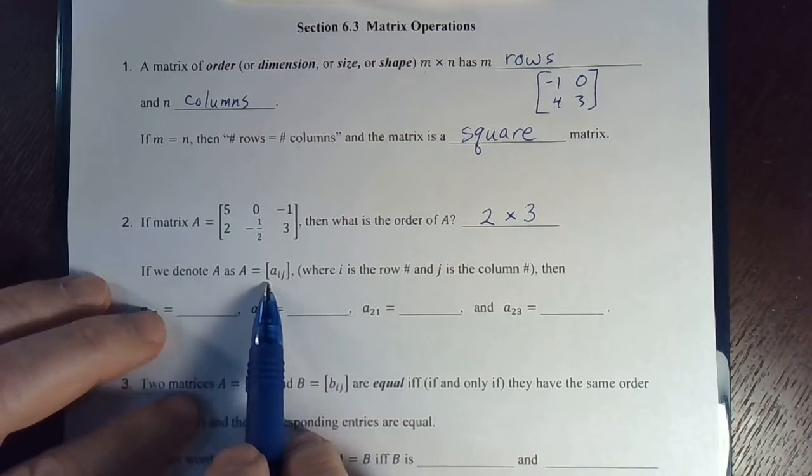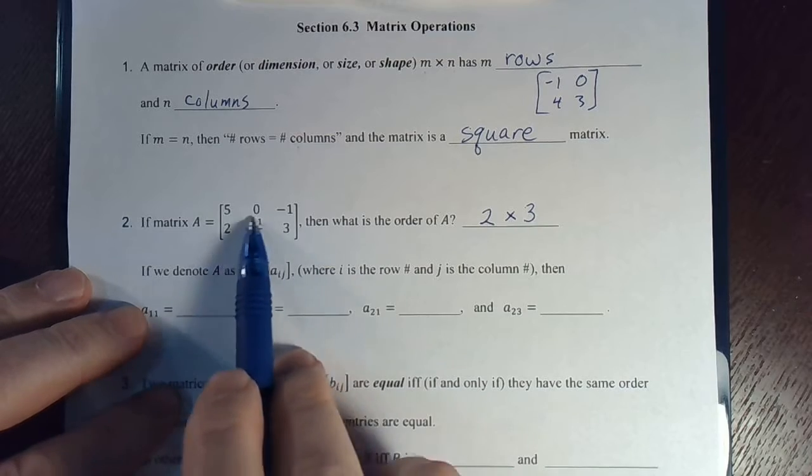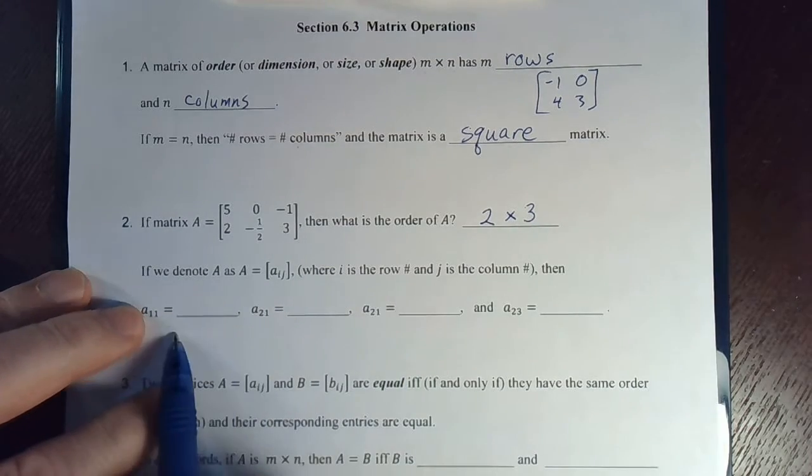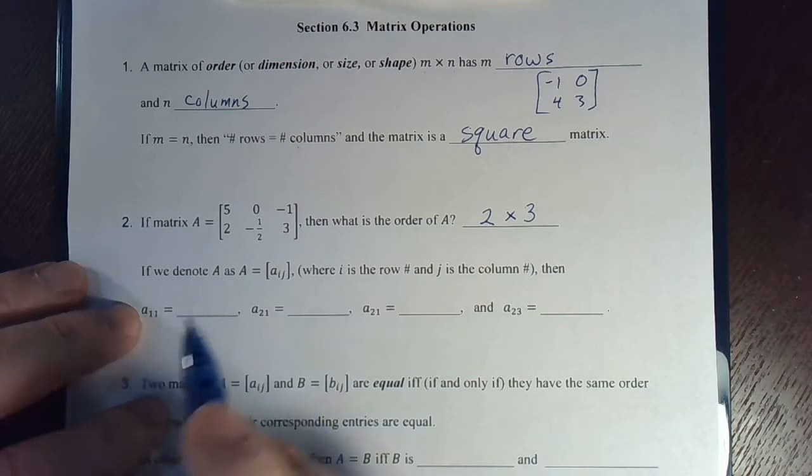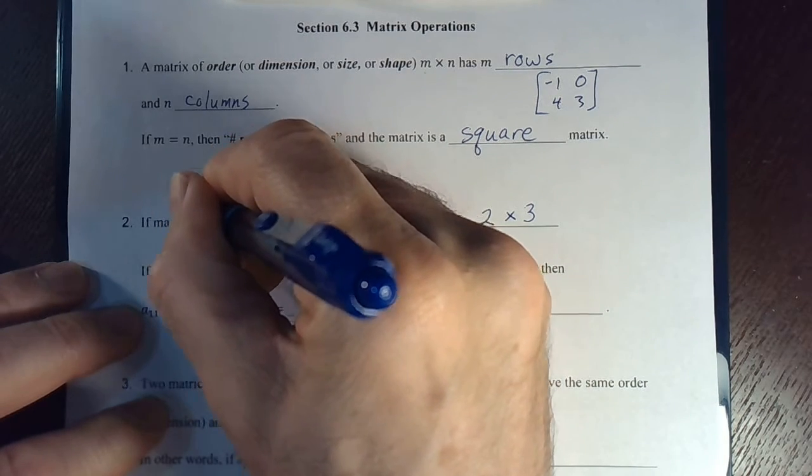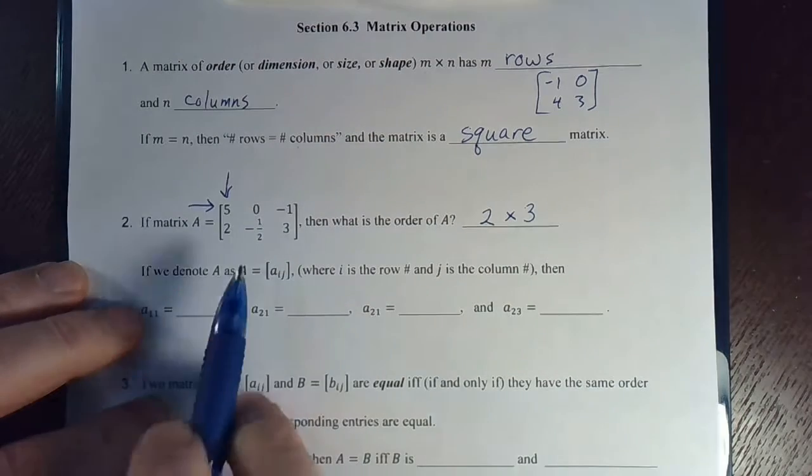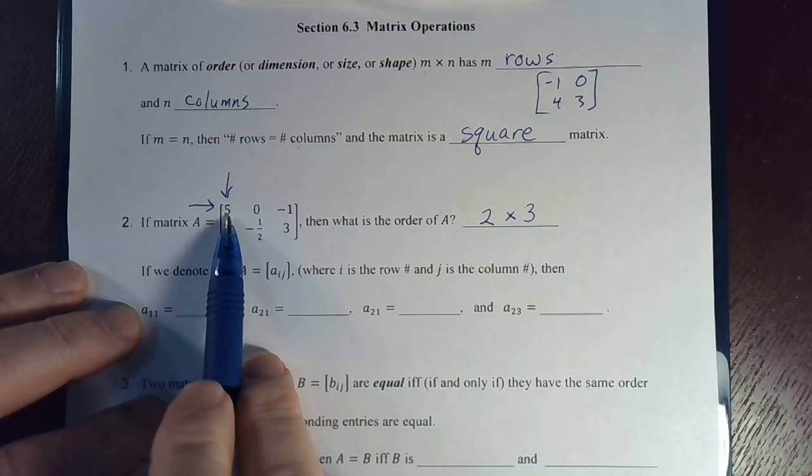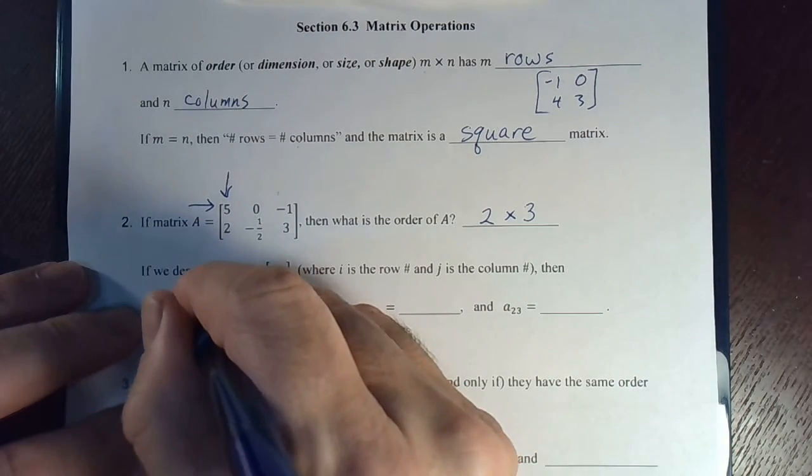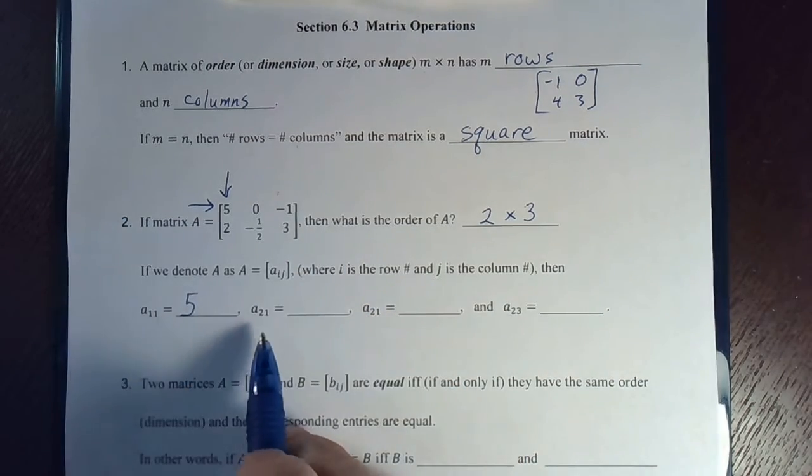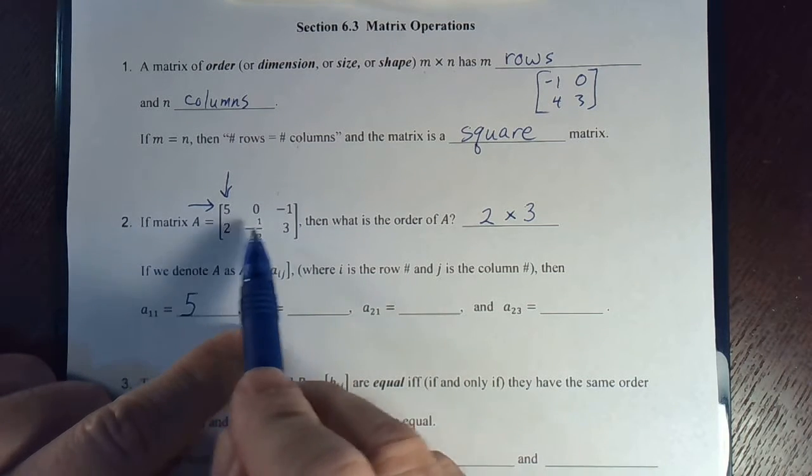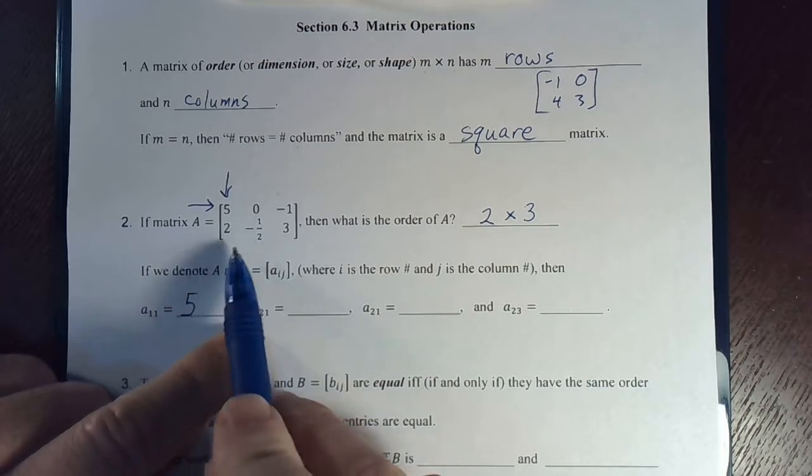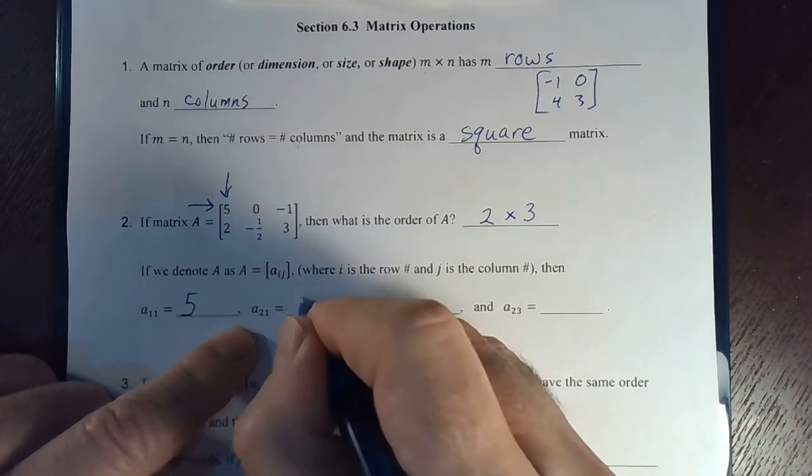So, let's use this matrix as an example. What is a one one? The element in row one, column one. Well, row one means that row, and column one means that column. So, it's this element right here, number five. A two one, that means the second row, so the bottom row for this matrix, and the bottom row first column is two.